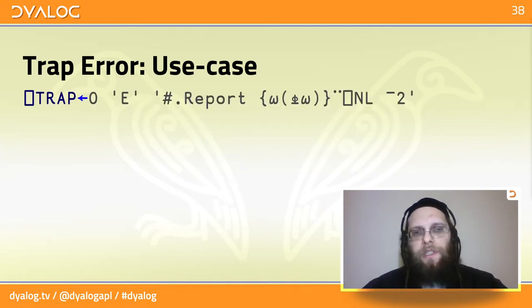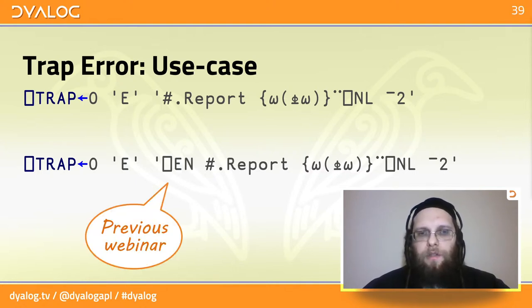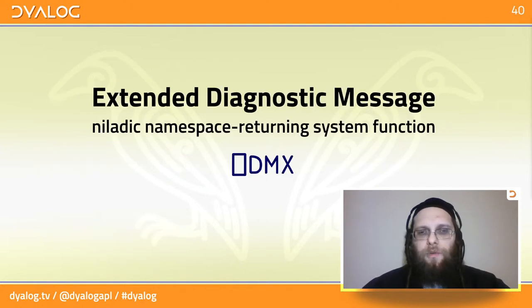So the way it would look is we're assigning quad trap like this. But there's actually more we might want to include. It's very good to have all these names and values. But we might also want to know what error happened. And so we have the error number that we learned about in the previous webinar. But there are a lot more details to the error that could be included in the report as well. And this brings us to QuadDMX.